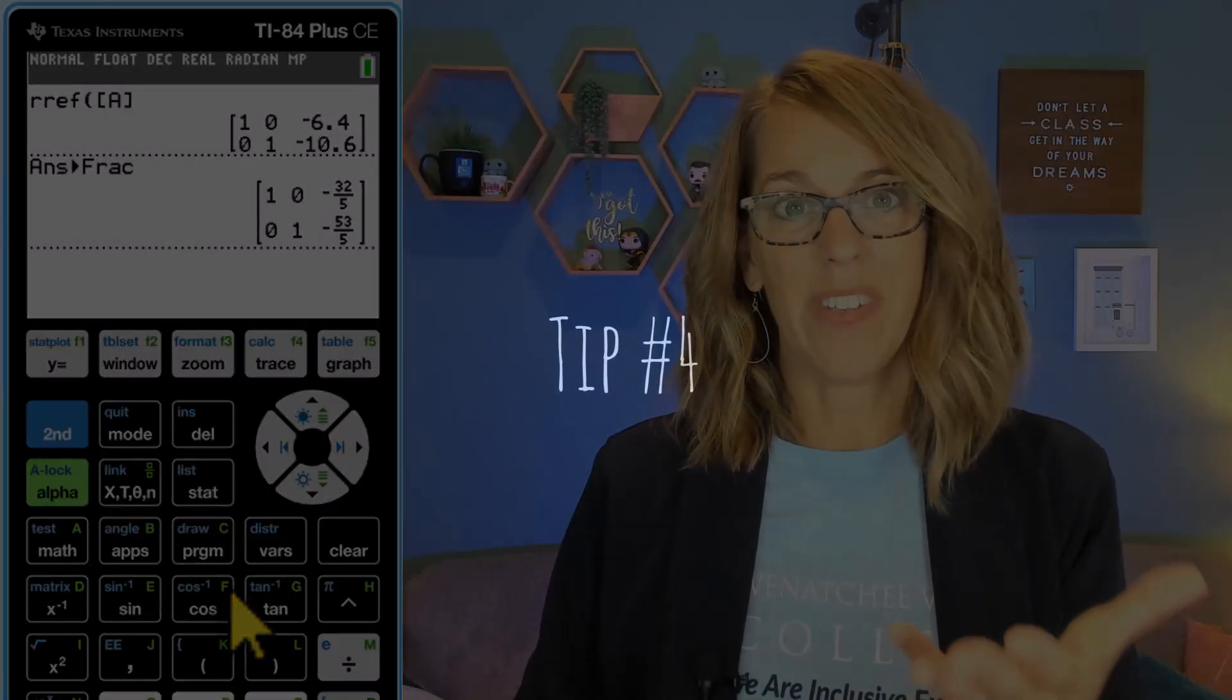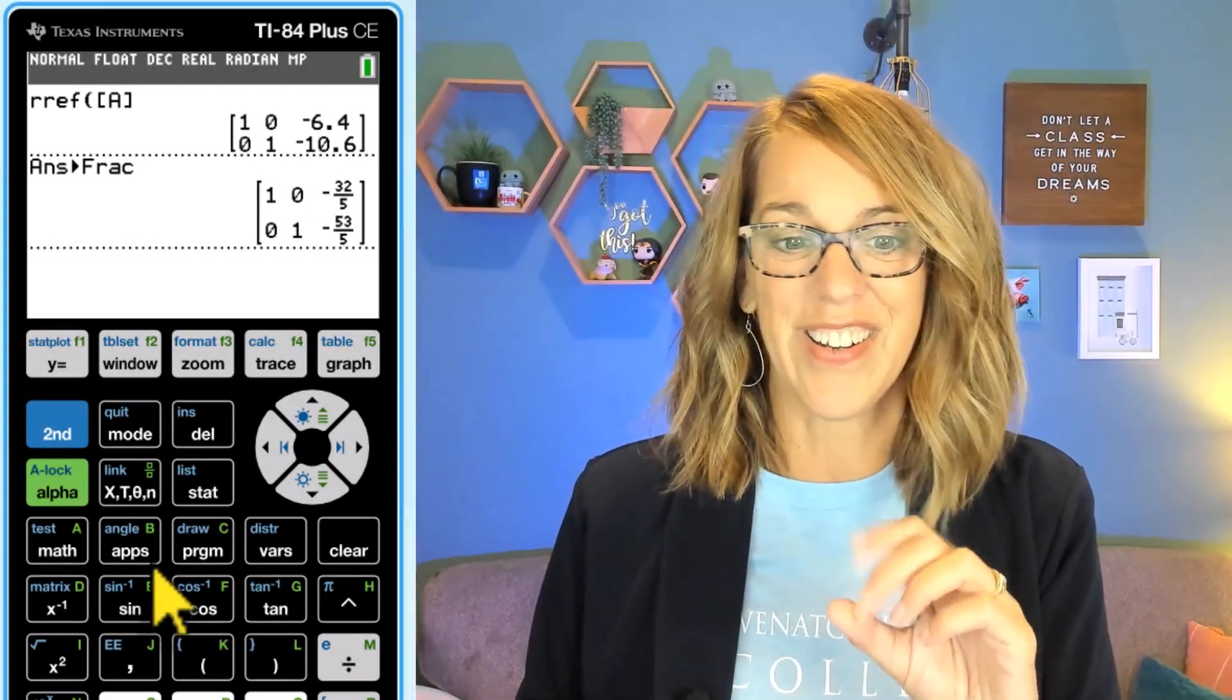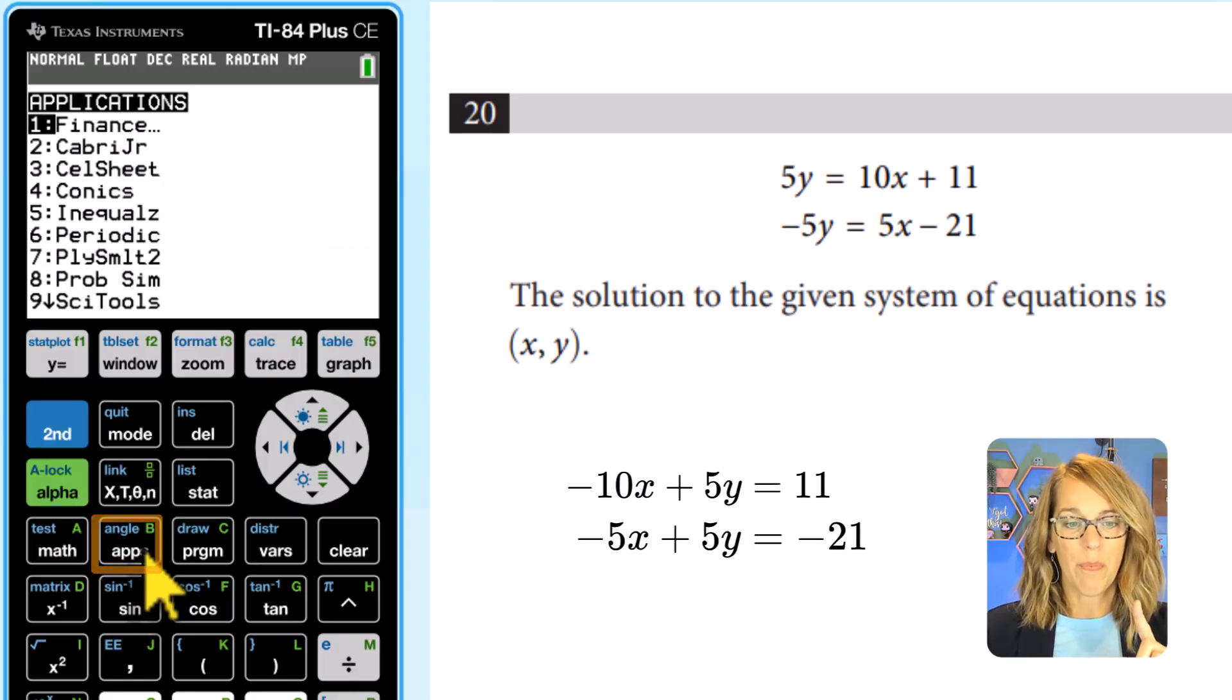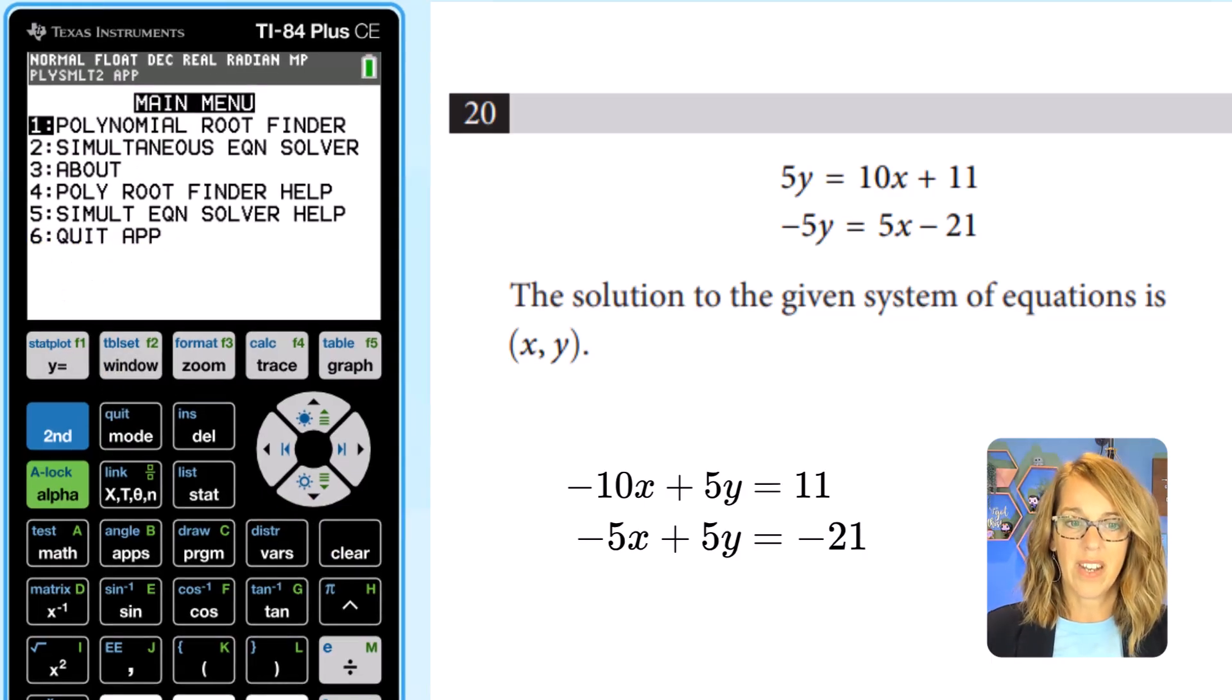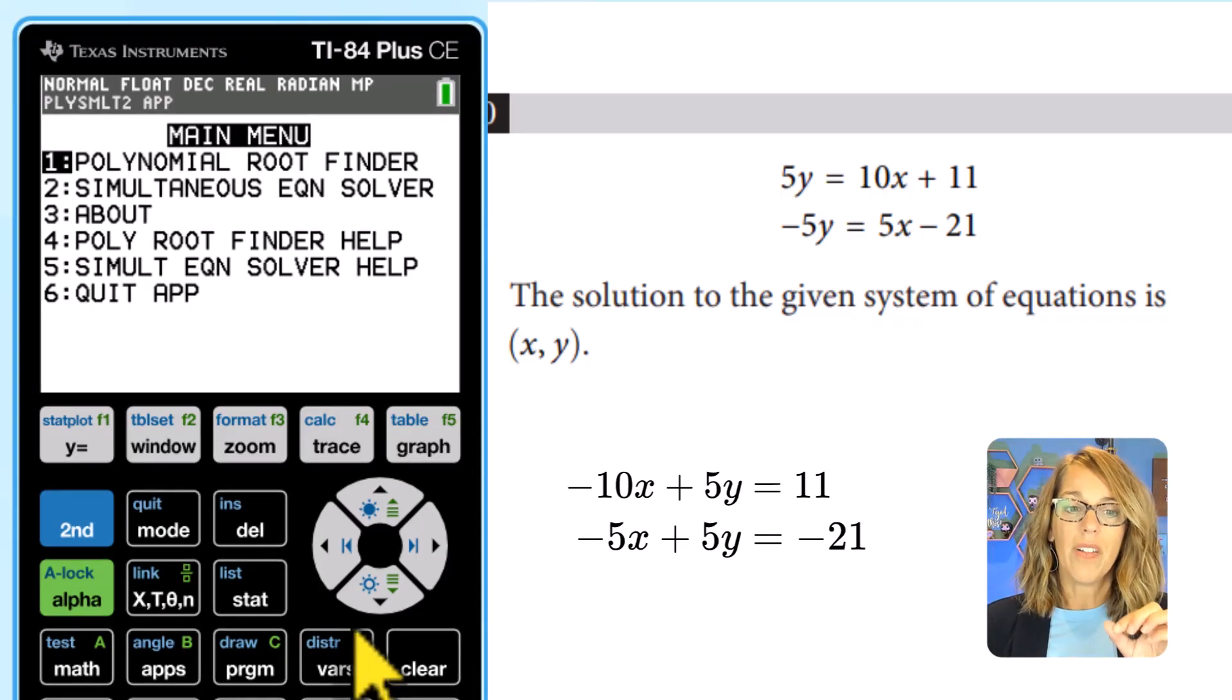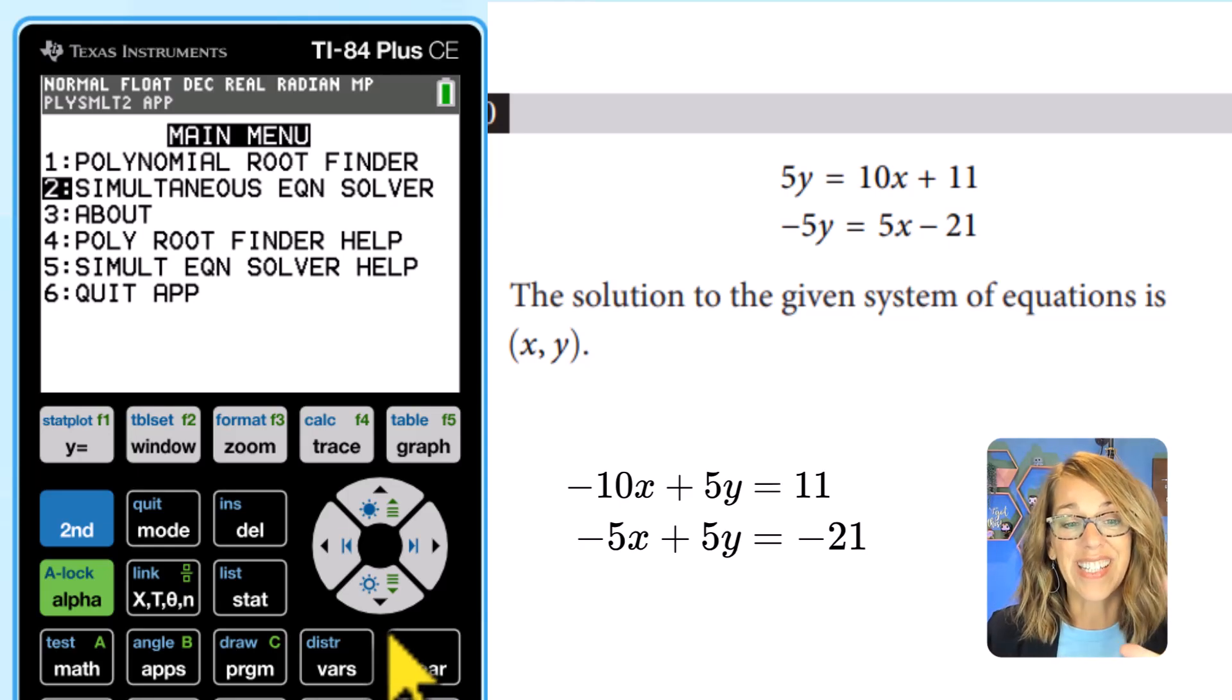So let me show you the second method. The second method is actually even better but you might not all have it on your calculator. It's one of the apps. So I'm going to hit my apps key and I am looking for the polynomial simulator which is number seven. Such a weird name for it but the polynomial simulator and then hit enter. Take a look at what this does. Again you might not have all of these. A polynomial root finder root is solution. I could have used that for number one. I also have a simultaneous equation solver. Simultaneous equations are systems of equations.